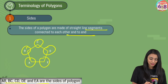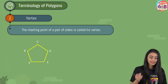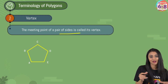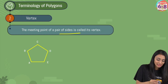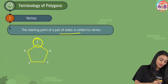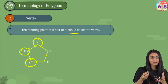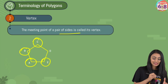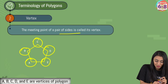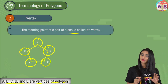Now let's move ahead to the next terminology: vertex. A vertex is basically the meeting point where a pair of sides are meeting. Here we can see side BC and CD meeting at point C; BC and AB meeting at point B; AB and AE meeting at A; AE and DE meeting at E; and CD and DE meeting at D. So ABCDE — these are the vertices of this polygon.